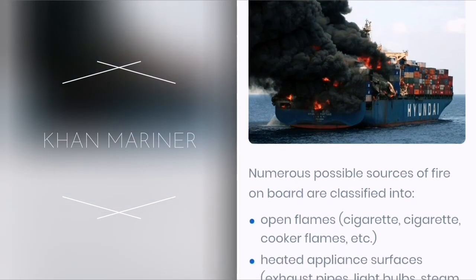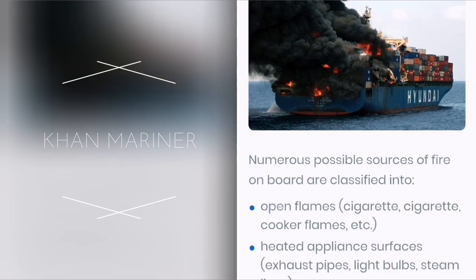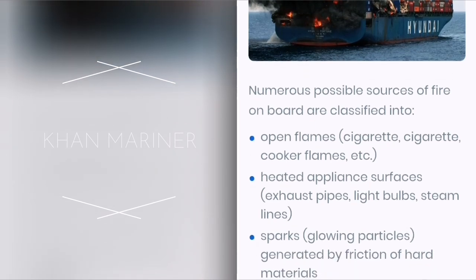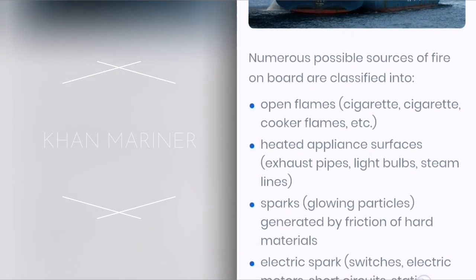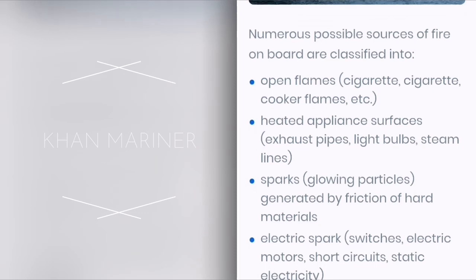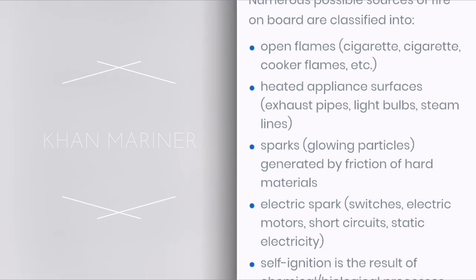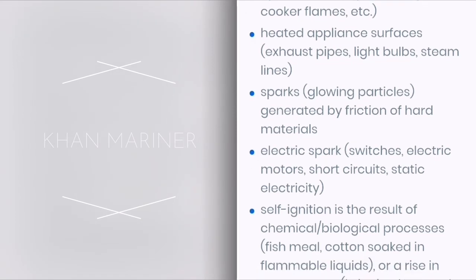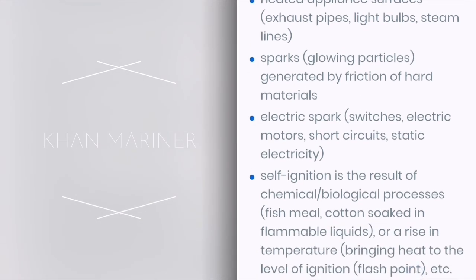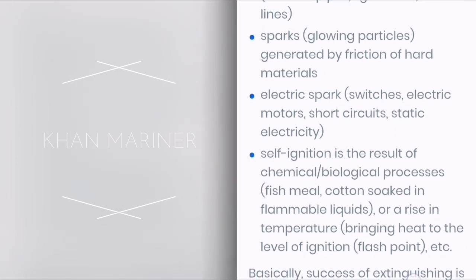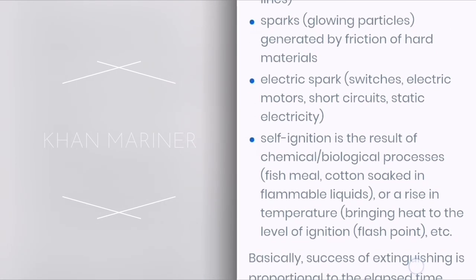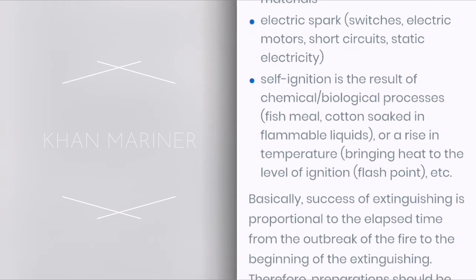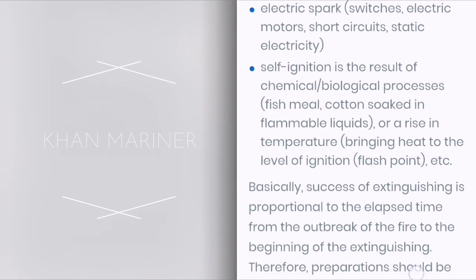Numerous possible sources of fire on board are classified into: open flames (cigarettes, cooker flames, etc.), heated appliance surfaces (exhaust pipes, light bulbs, steam lines), sparks or glowing particles generated by friction of hard materials, electric sparks (switches, electric motors, short circuits, static electricity), and self-ignition resulting from chemical or biological processes (fish meal, cotton soaked in flammable liquids) or a rise in temperature bringing heat to the level of ignition (flashpoint). Basically, the success of extinguishing is proportional to response time.